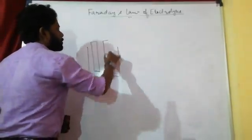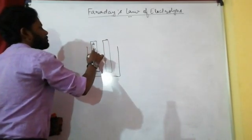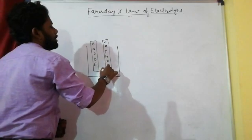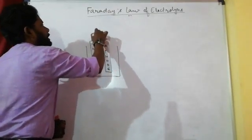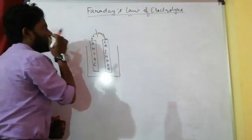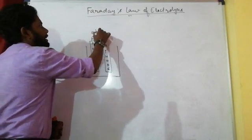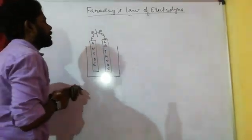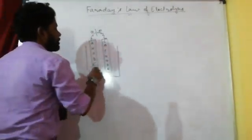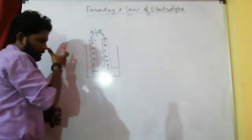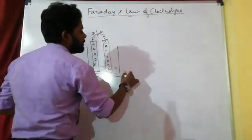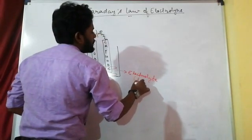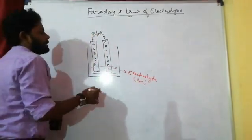In the electrolytic cell setup, one electrode is the anode and the other is the cathode. The anode is connected with the positive terminal of the battery, and the cathode is connected with the negative terminal of the battery. So cathode is negative and anode is positive.